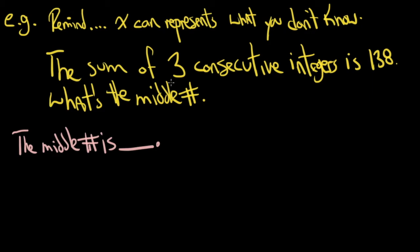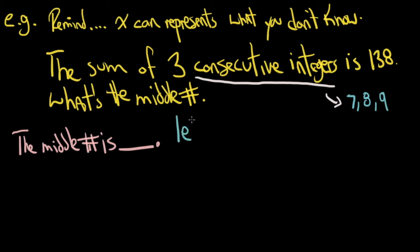We need to let x be something. Consecutive integers — consecutive means in a row. So imagine you had numbers like 7, 8, and 9. Are those consecutive integers? Yes. I need to find three consecutive numbers that equal 138. First, you have to tell me what x is going to represent. Let x equal the first number. Imagine the first number is x — say it was 7. Algebraically, what would 8 be? It would be x plus 1. What would 9 be? It would be x plus 2.